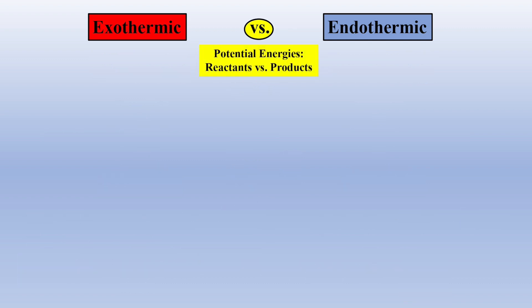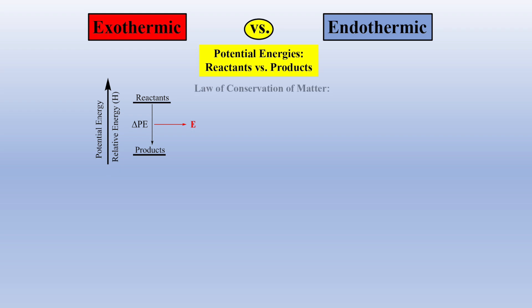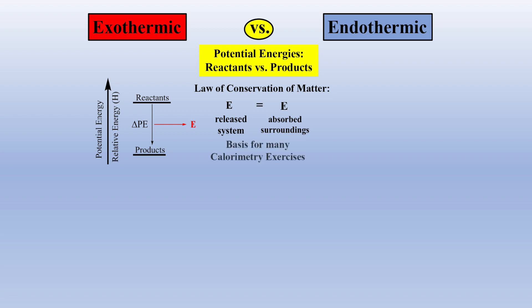A third way to think of this change is to examine the average potential energies of reactants and products. In an exothermic reaction, the potential energy of reactants is higher than the potential energy of products. Thus, as reactants form products, energy is released to the surroundings — the difference in potential energy between reactants and products. Due to the law of conservation of matter, the energy released from the system is equal to the amount of energy absorbed by the surroundings, and this is the basis for understanding calorimetry exercises.